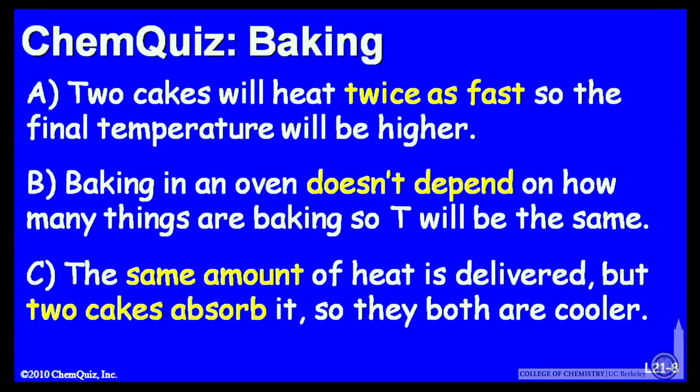Let's look at possible explanations for each answer. A, two cakes will heat twice as fast, so the final temperature will be higher. B, baking in an oven doesn't depend on how many things are baked, so the temperature will be the same. Or C, the same amount of heat is delivered, but two cakes absorb it, so they both will be cooler. Think about those three and make a selection.